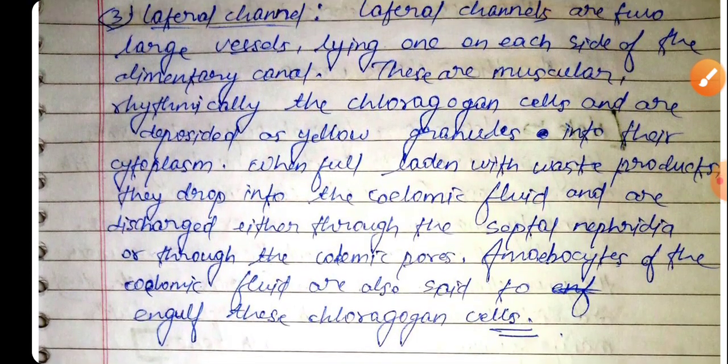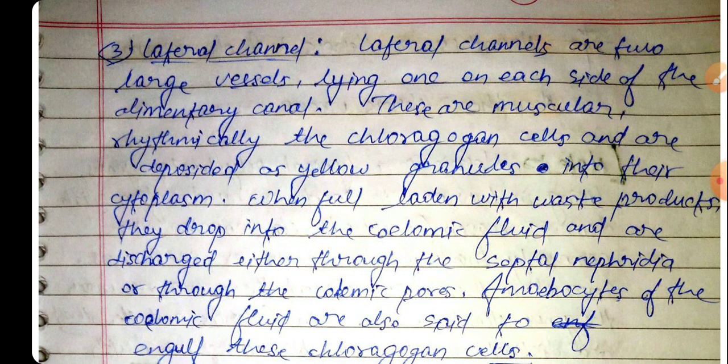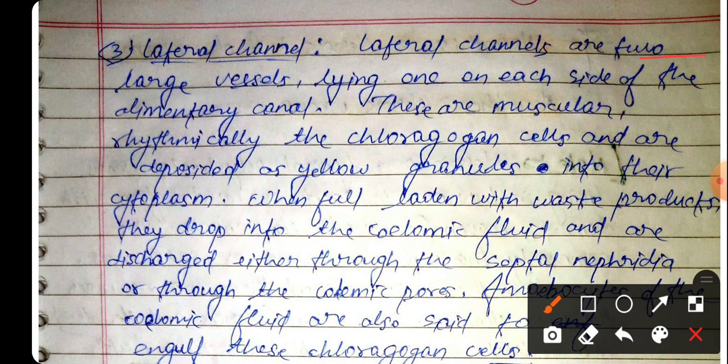The lateral channels are two large vessels lying on each side of the alimentary canal. These are muscular and rhythmically contractile. They contain chloragogen cells which deposit yellow granules within their cytoplasm.